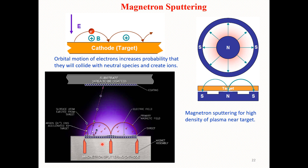In the process, argon ions are accelerated toward the target and made to strike it. As a result, they eject surface atoms — the sputtered atoms — from the target. These atoms are then accelerated toward the substrate where they are deposited as a thin film.